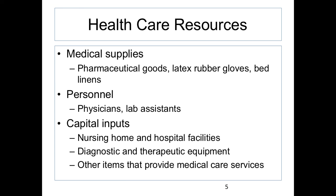We can categorize healthcare resources into three big categories. First, medical supply — pharmaceutical goods and devices, such as medications, blood pressure devices, and bed linens. Second, personnel — doctors, nurses, health economists, biostatisticians, and lab assistants; these are human capital resources. Third, capital inputs — such as nursing homes and hospital facilities. Any resources that can be used to generate healthcare services are defined as a capital input.